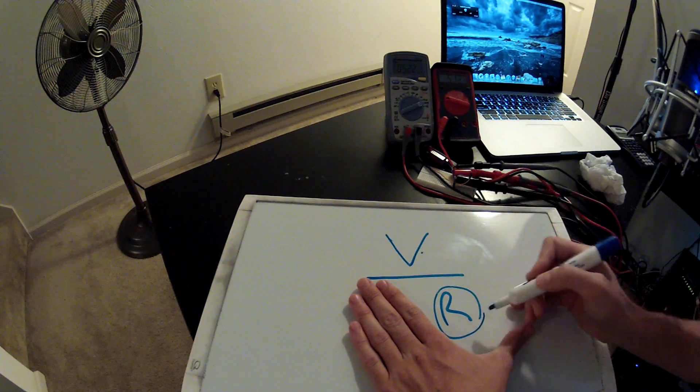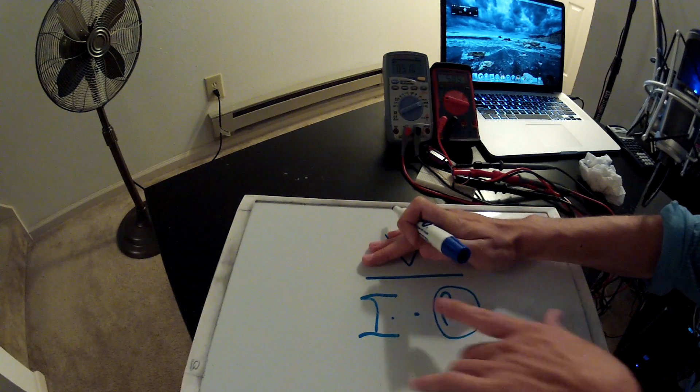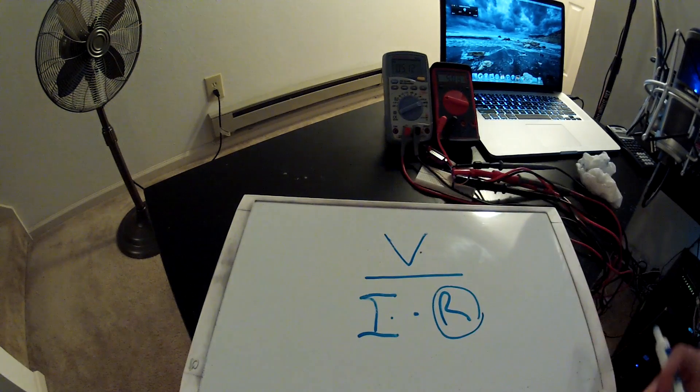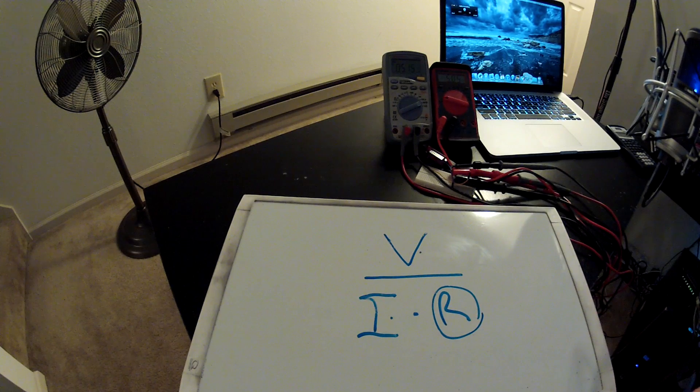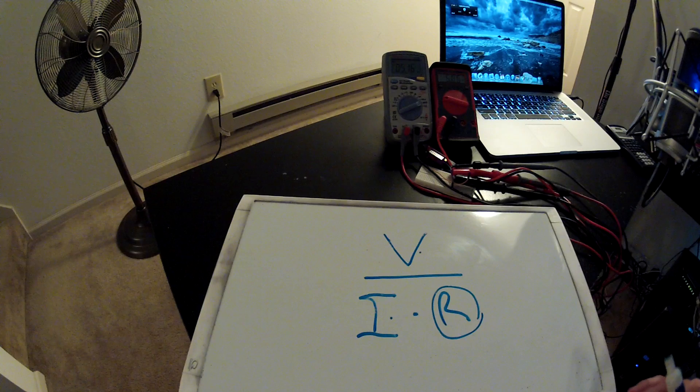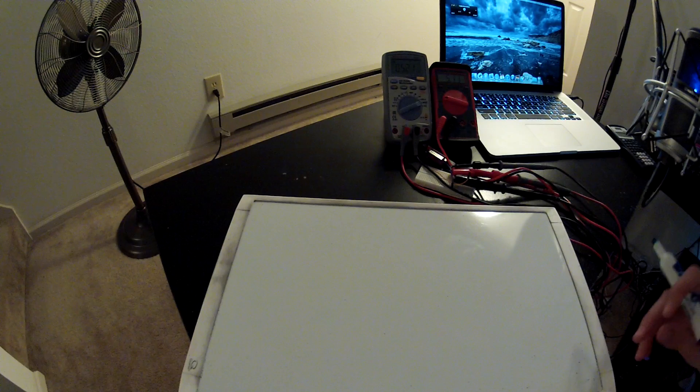you go V divided by R. If you need to find voltage, put your hand over the V and that equals I times R. So it's pretty simple - you can find out any of these things just by putting your hand over it and just remember V over I*R. Now we could talk a little bit about